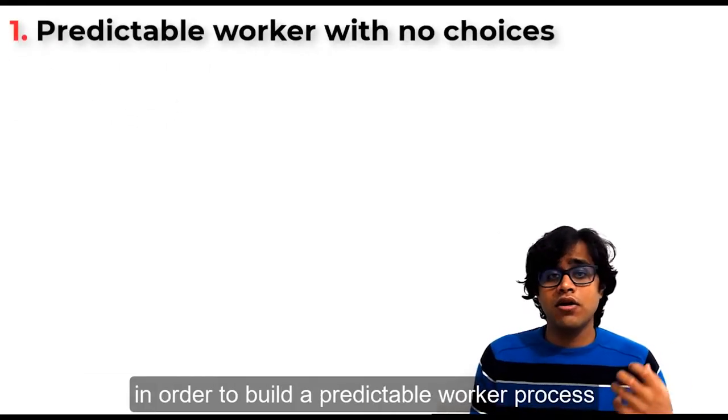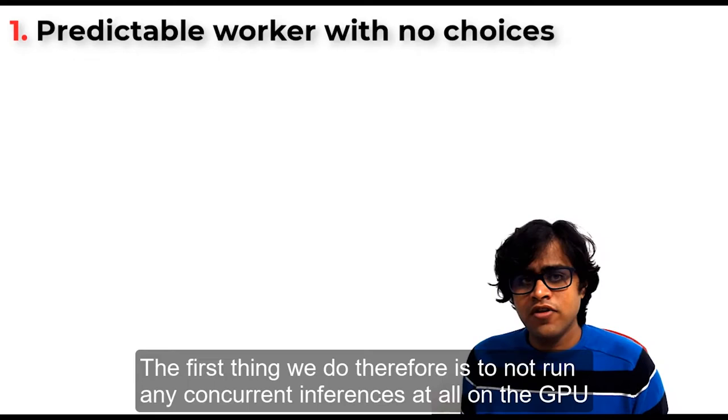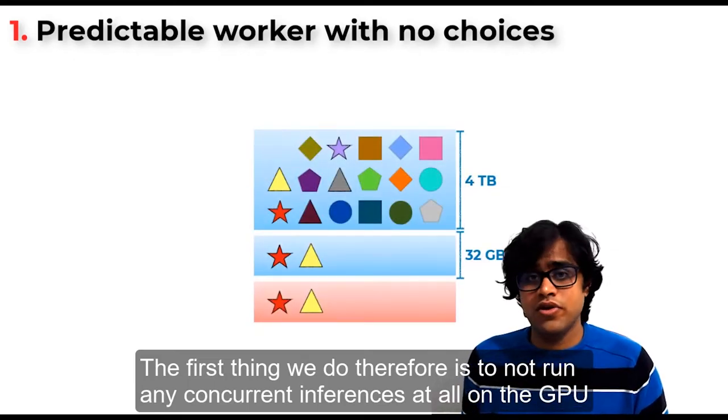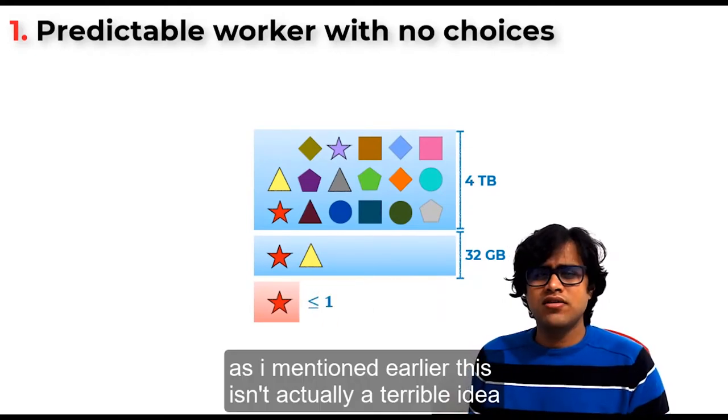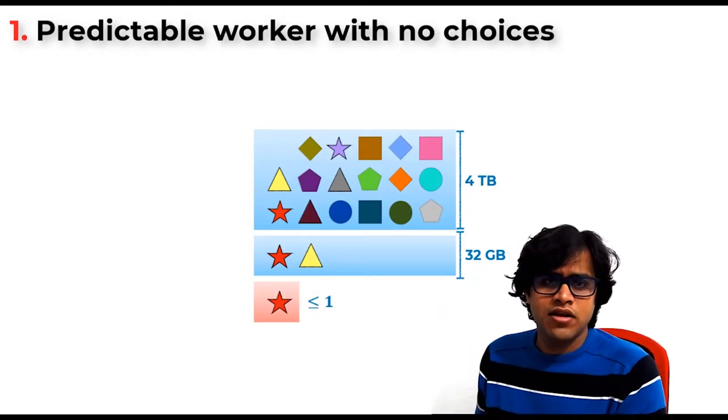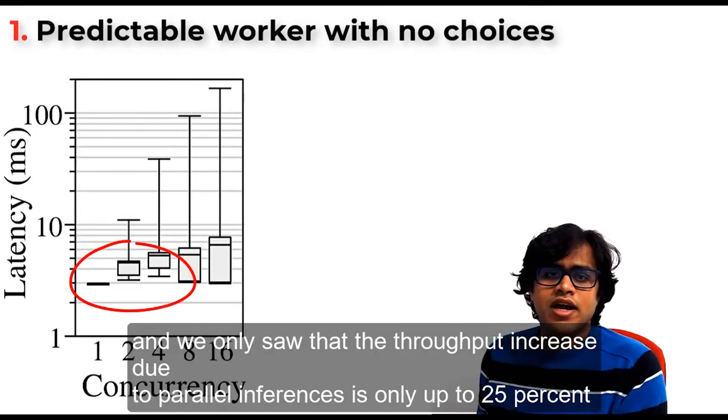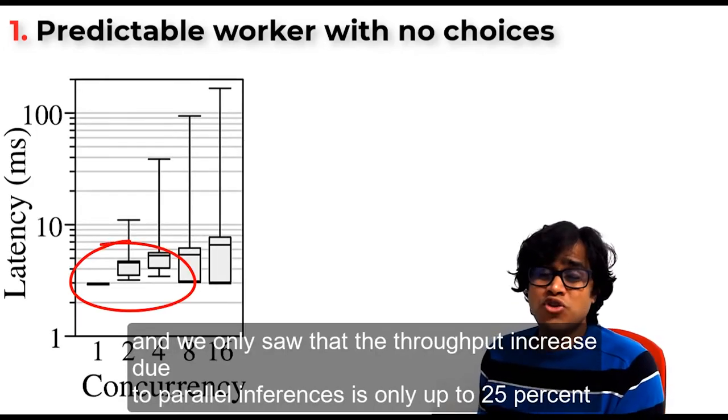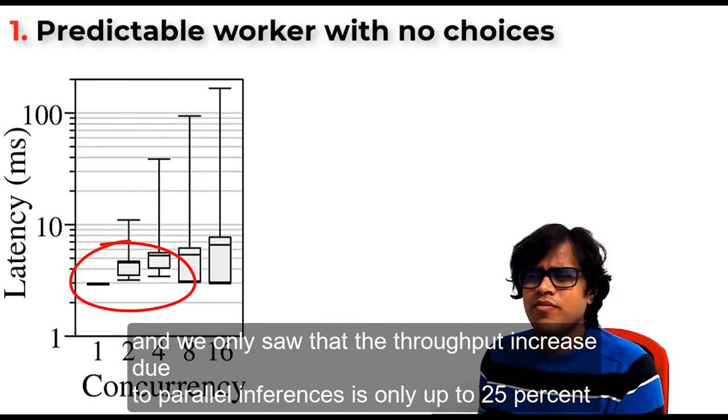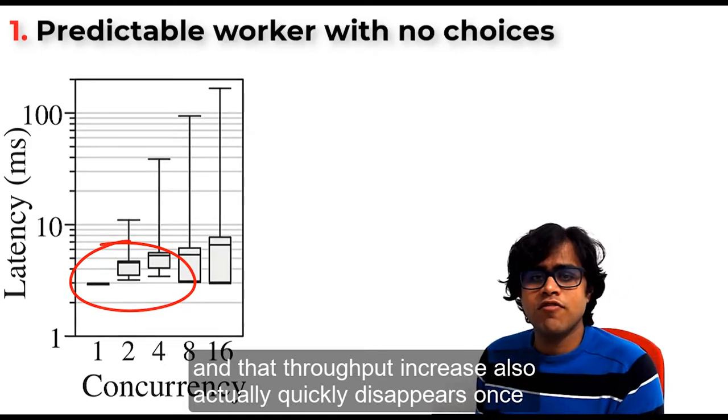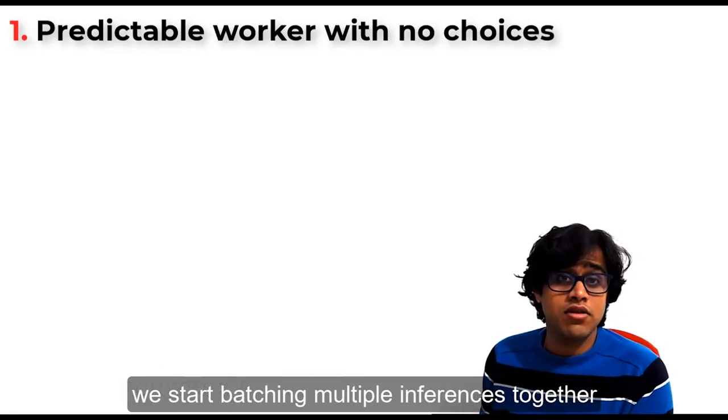So Clockwork must get rid of all sources of unpredictability. In order to build a predictable worker process, the first thing we do therefore is to not run any concurrent inferences at all on the GPU. As I mentioned earlier, this isn't actually a terrible idea. DNN inference is a highly parallel operation in itself. And we only saw that the throughput increase due to parallel inferences is only up to 25%. And that throughput increase also actually quickly disappears once we start batching multiple inferences together.